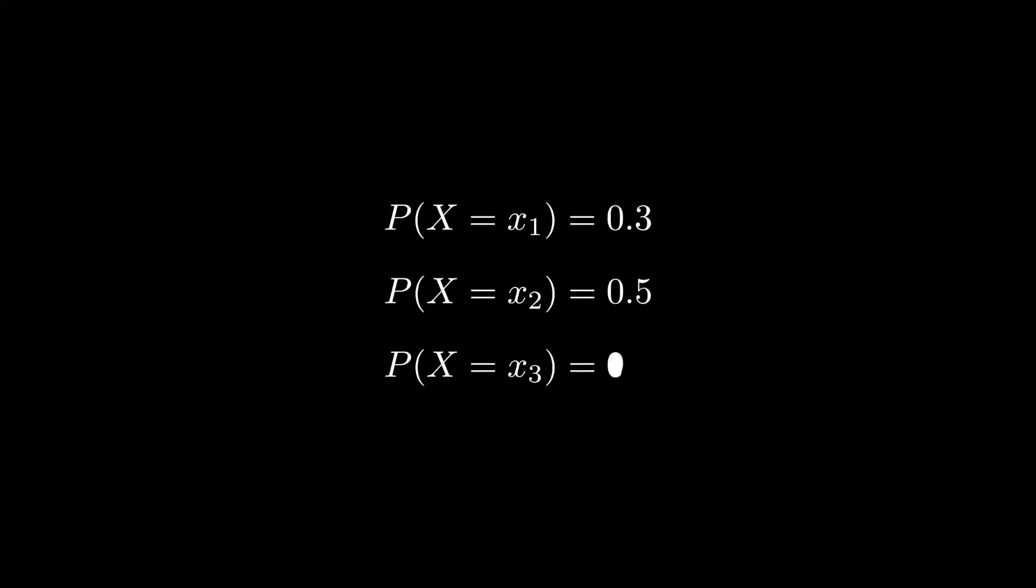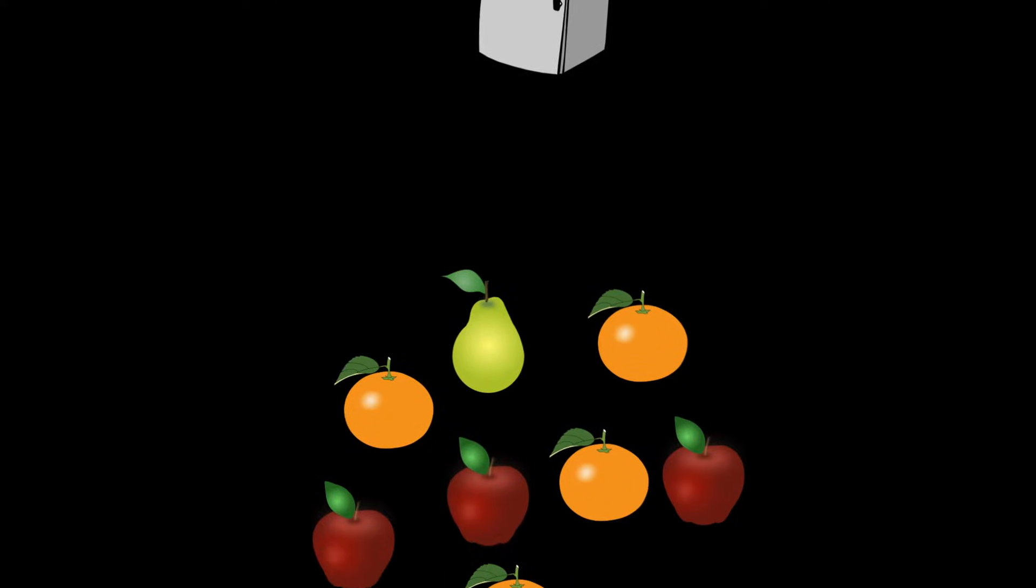Some of our intuitive notions of probability from everyday life transfer over to discrete probabilities, where we can think of the probability assigned to each possible state as the fraction of times that particular state is likely to occur. For example, say it's late, we're tired and hungry, and we're randomly picking a piece of fruit out of the fridge with an equal chance of picking any particular piece.